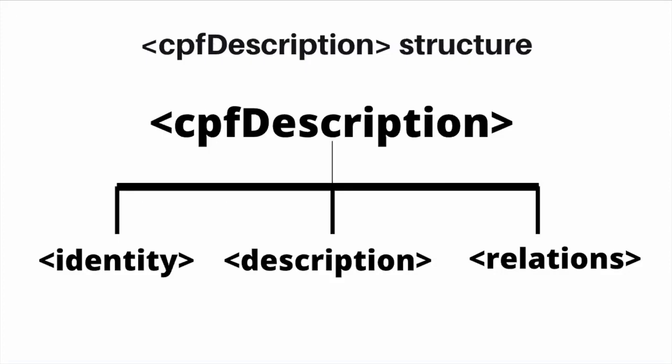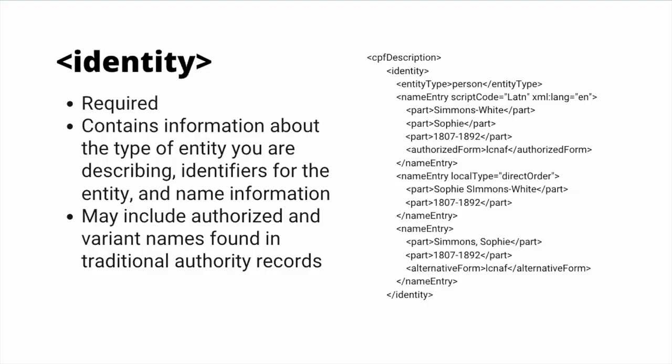The CPF Description includes three separate parts: Identity, Description, and Relations. Identity is the only section of CPF Description that is required, and it contains information about the type of entity you are describing — whether it's a corporate body, person, or family — identifiers for the entity, and name information. Within Identity, you may include authorized and variant names found in traditional authority records.